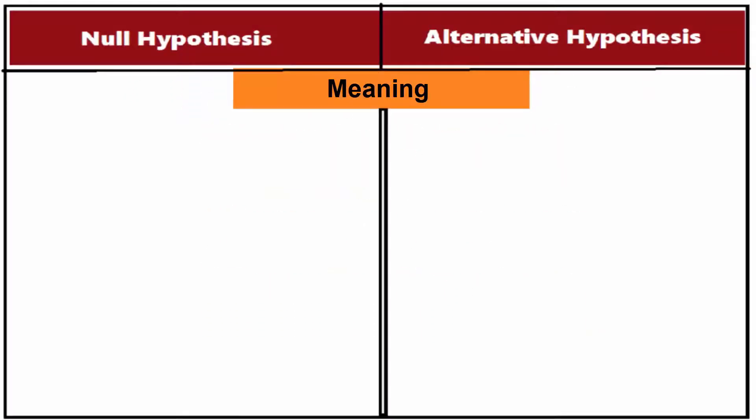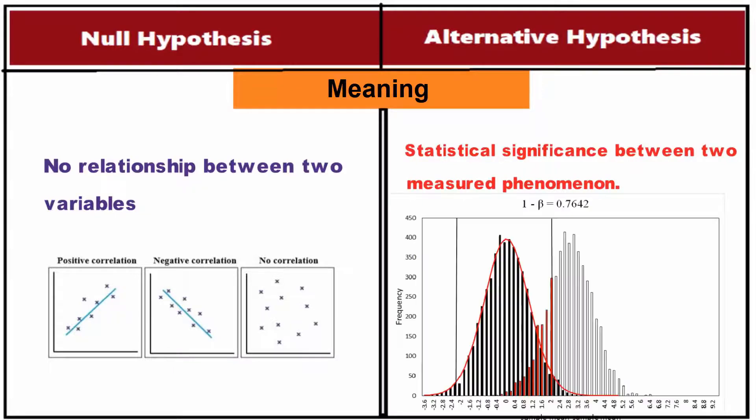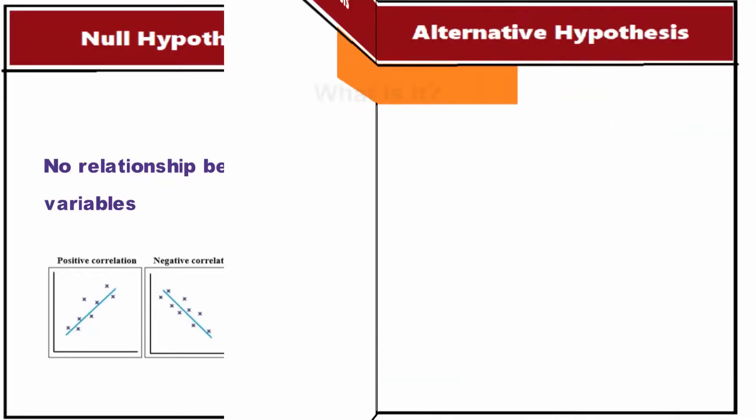Meaning: A null hypothesis is a statement in which there is no relationship between two variables. An alternative hypothesis is a statement that is simply the inverse of the null hypothesis. For example, there is some statistical significance between two measured phenomena.